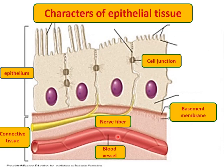Blood vessels are present in the underlying connective tissue; they do not penetrate between the epithelial cells. However, nerve fibers, shown in yellow, can penetrate between the epithelial cells.